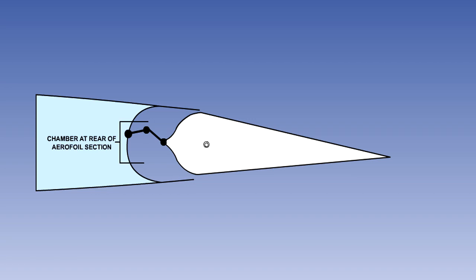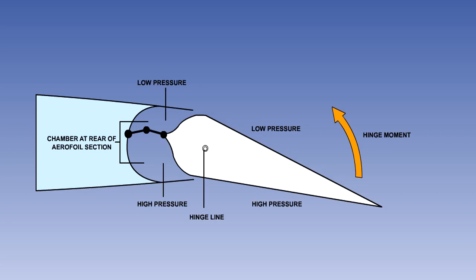Internal balance works on the same principle as the setback hinge, but the balancing area is enclosed inside the rear of the main aerofoil section. This forms a chamber split into two halves by a flexible diaphragm, the areas of which will feel the same changes in pressure as are produced above and below the control surface. The pressure differential inside the chamber will produce a moment in opposition to the hinge moment.